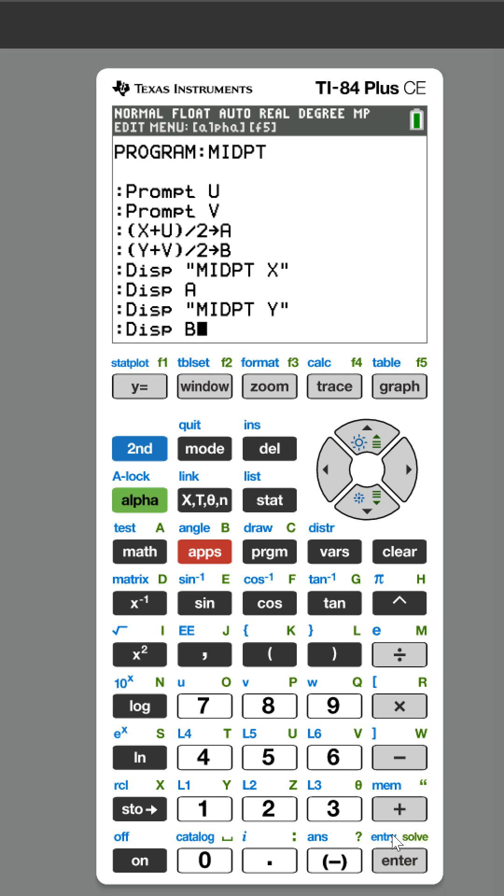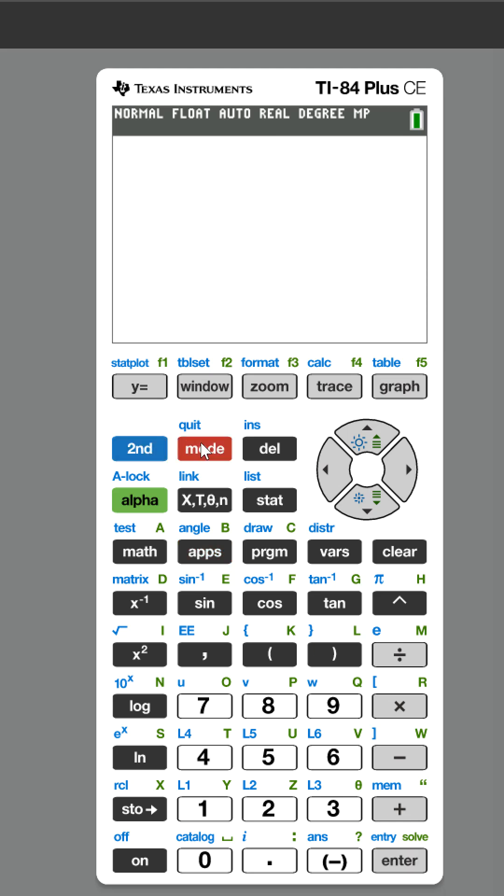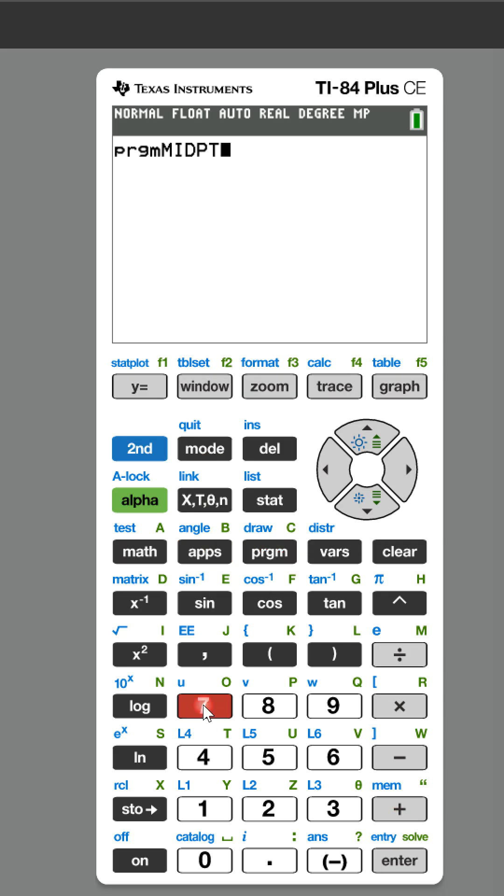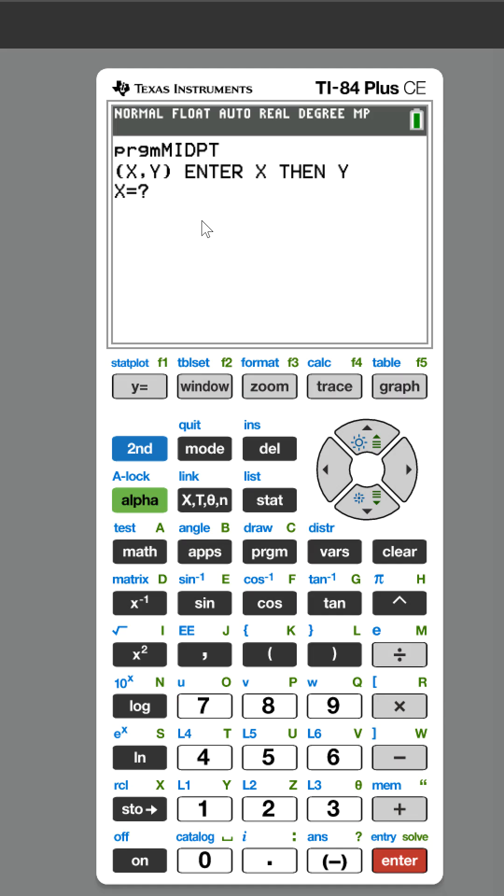I am now done with that program, so let's test it and make sure it works. To test it you go to program, hit seven or whatever number it is, select the program midpoint, and then you hit enter again to execute it. It tells us to enter X.